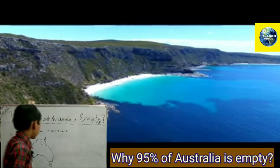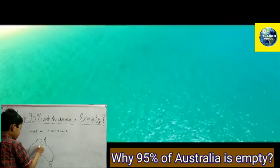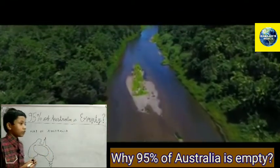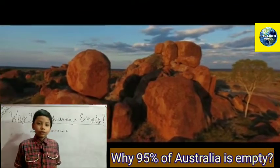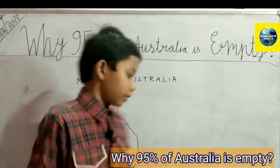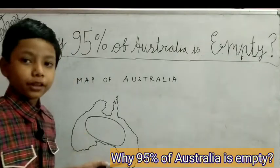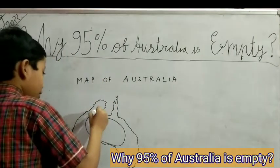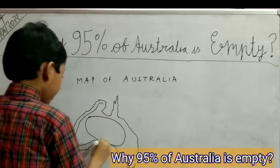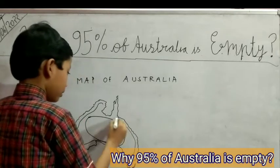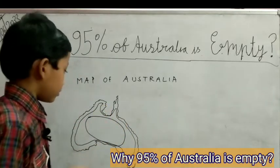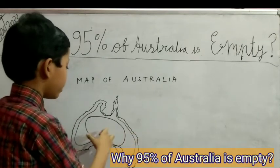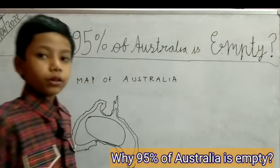The only reason is that in the very middle of Australia, in this area, it is literally deserts. Yes. This area has only sand and no water, while the coastal regions of Australia do have grass in it. That's because the coastal regions get more water than the middle of Australia.